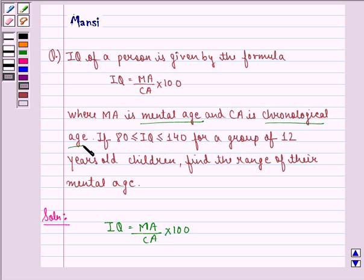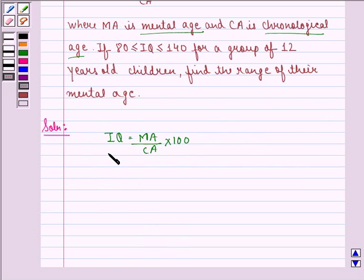Now it is given that CA equals 12 years and 80 is less than or equal to IQ is less than or equal to 140.